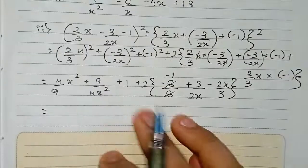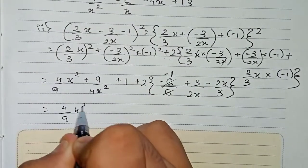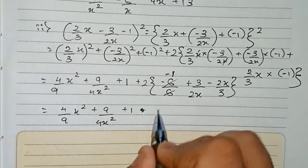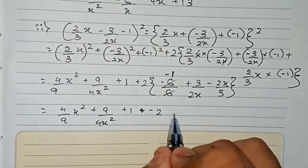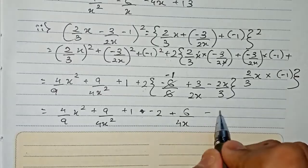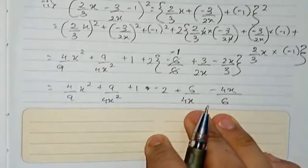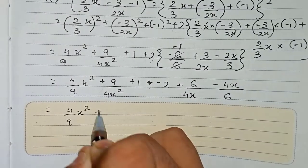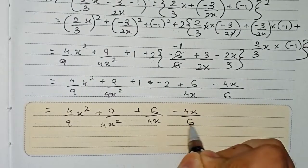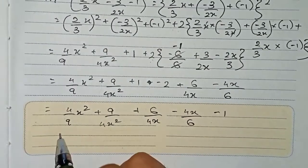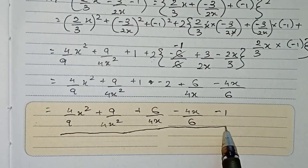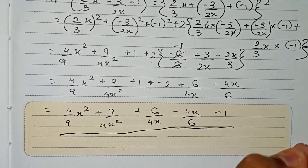Multiplying all cross terms by 2: 4/9 x² + 9/4x² + 1, then 2 × (-1) = -2, plus 2 × 3/2x gives +6/4x, and minus 2 × 2/3x gives -4x/6. So the final expanded form is 4/9 x² + 9/4x² + 6/4x - 4x/6 - 1, which is the answer for (2/3x - 3/2x - 1)².